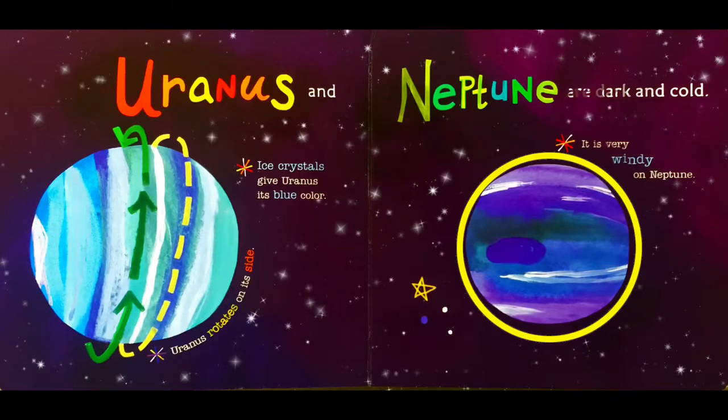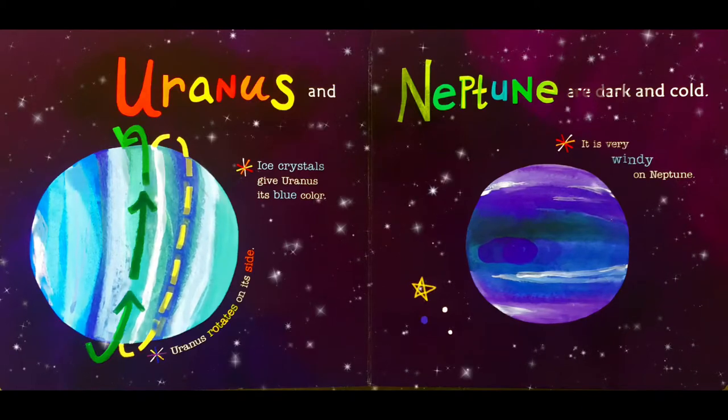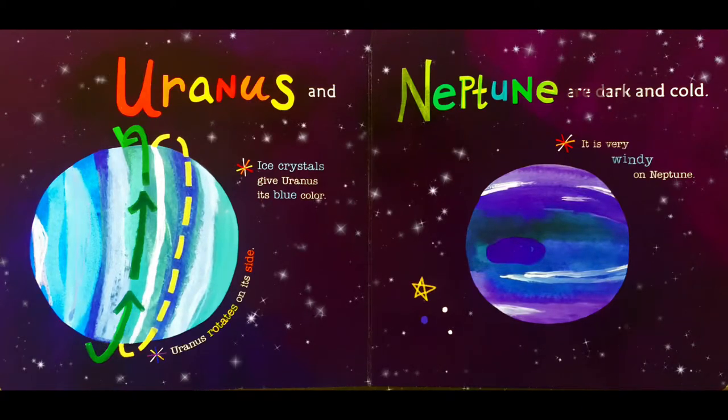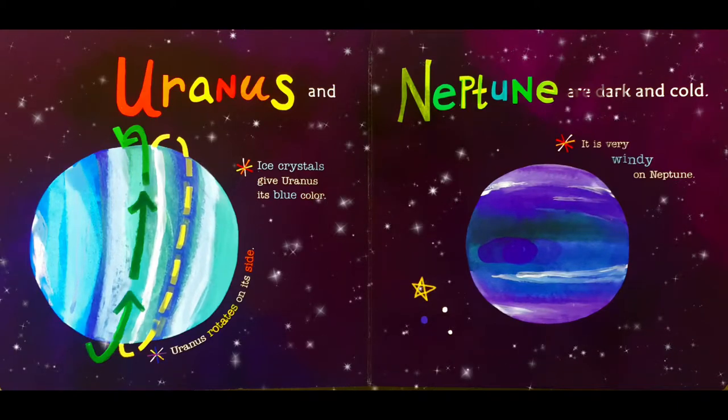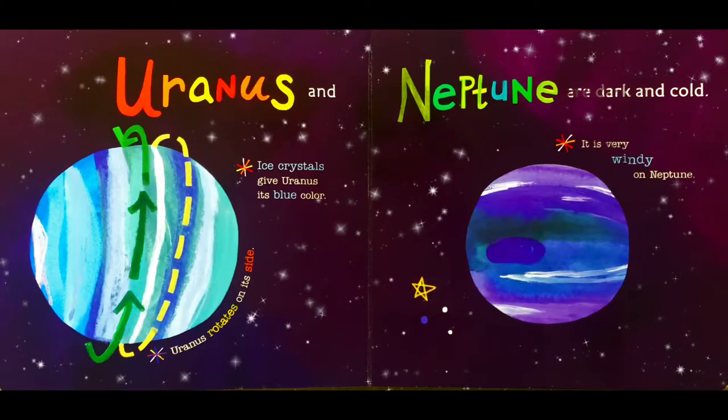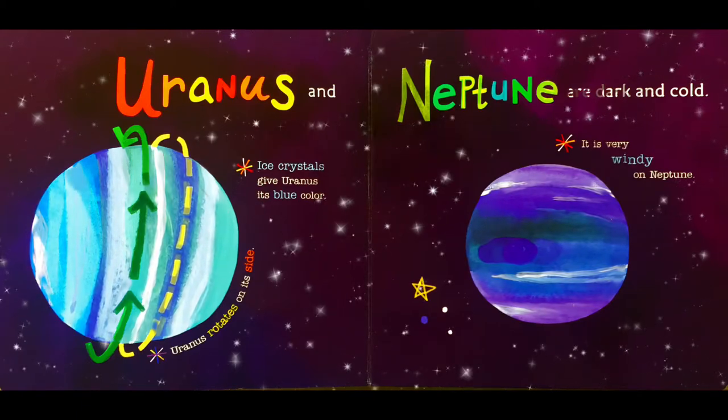Uranus and Neptune. Uranus and Neptune are dark and cold. Ice crystals give Uranus its blue color. Uranus rotates on its side. It's very windy on Neptune.